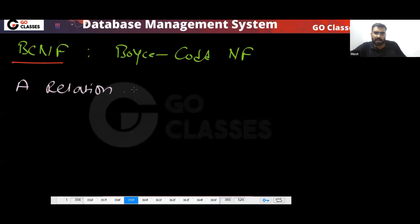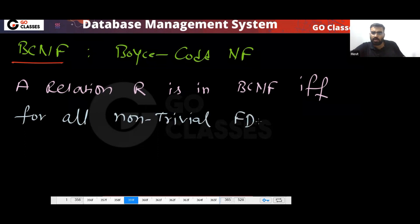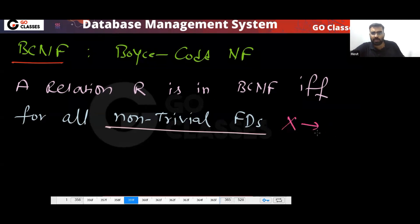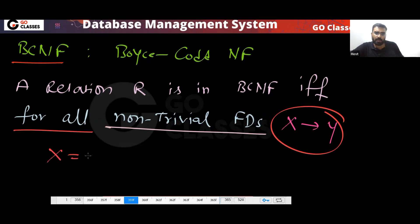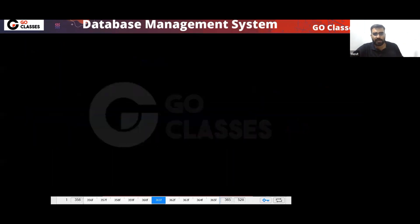A relation R is in BCNF if and only if, for all non-trivial functional dependencies, you take any non-trivial FD — this X must be a super key. Just check the LHS of every non-trivial functional dependency: it should be a super key. This is Boyce-Codd normal form.